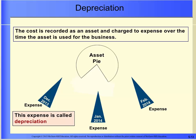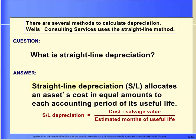Now let's move on to the concept of depreciation. When we buy an asset that will be used for many years, we will expense a portion of the cost of the asset during each of the periods that the asset benefits. This is called depreciation. Depreciation is the process of allocating the cost of long-term assets over their useful lives. The cost is not recorded as an expense at the time of purchase; instead, it is recorded as an asset such as equipment or building and charged to expense over the time the asset is used.